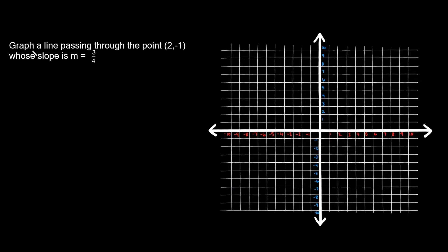This one says: graph a line passing through the point (2, -1) whose slope is equal to 3 over 4. So the first thing we can do here is plot the point that's given to us — (2, -1). Starting from the origin, go over 1, 2 and then down negative 1. So this point right here is (2, -1).